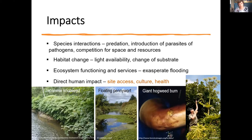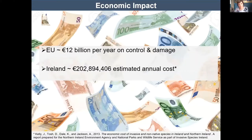On health, most notoriously there is giant hogweed. If your skin comes into contact with the sap of the plant in the presence of sunlight, you can get anything from a mild irritation to severe burning requiring skin grafts — a significant issue particularly in public areas along riverbanks. And of course there is cost. In Europe the Commission estimates the cost at 12 billion per year on control and damage due to invasive alien species, and in Ireland Kelly et al. in 2013 reported just under 203 million as the estimated annual cost.